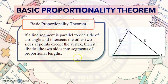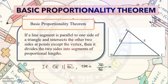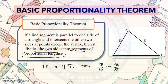if line segment DE is parallel to line segment BC, then according to the Basic Proportionality Theorem, we can say that AD over BD is equal to AE over CE. This means the theorem divides the two sides into segments of proportional lengths, and this is now our proportion.